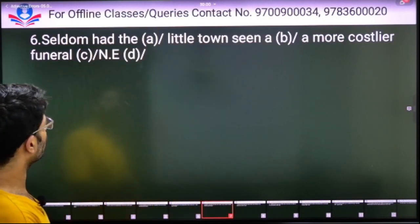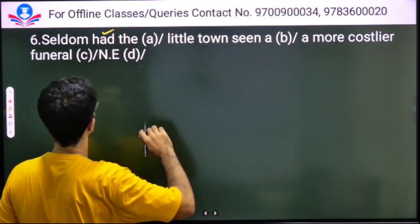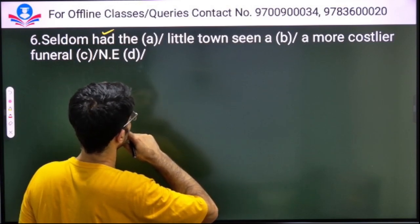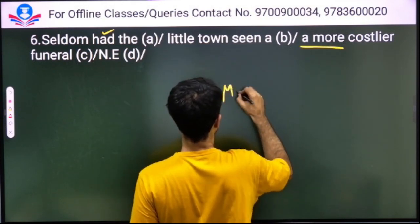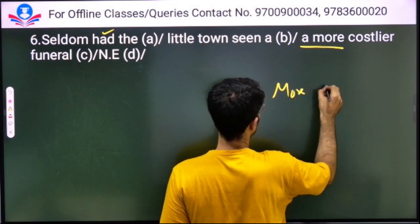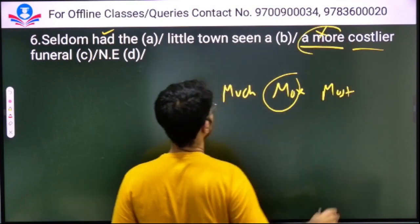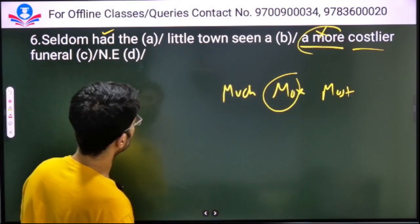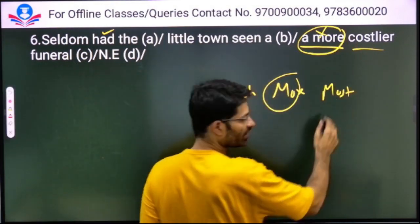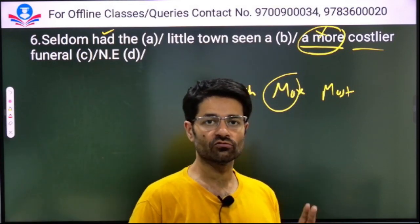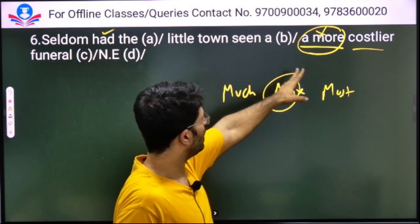Seldom had the little town seen a more costlier funeral. With 'more', 'most', if this is already comparative, then we don't add 'more' or 'most'. This rule is that two comparatives and two superlatives never come in a sentence. So it should be: seldom had the little town seen a costlier funeral.